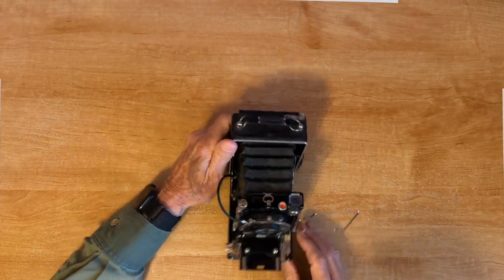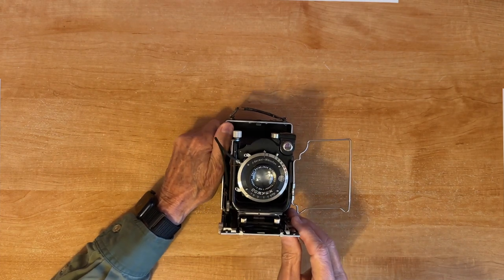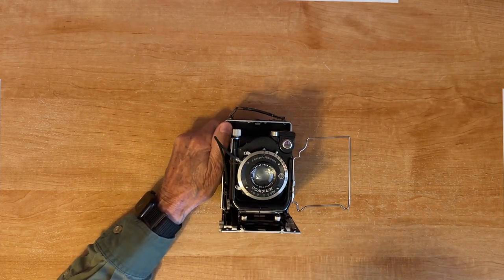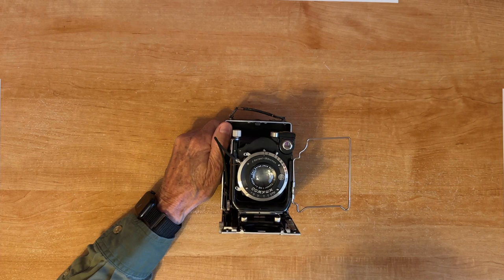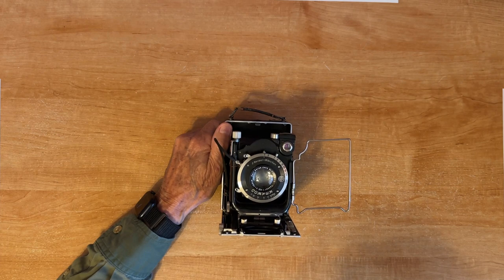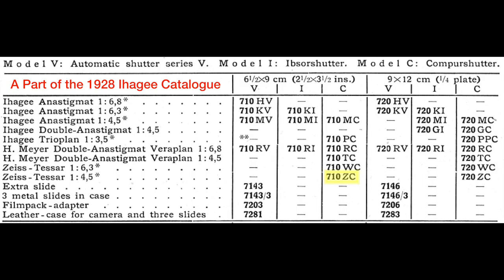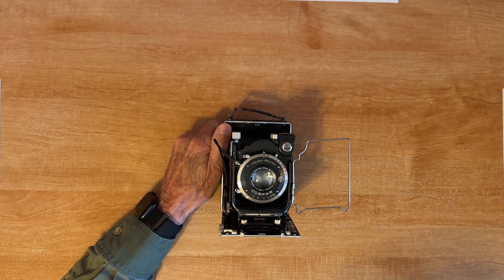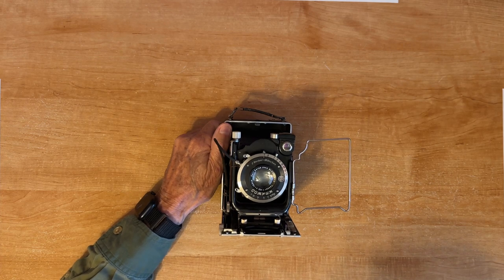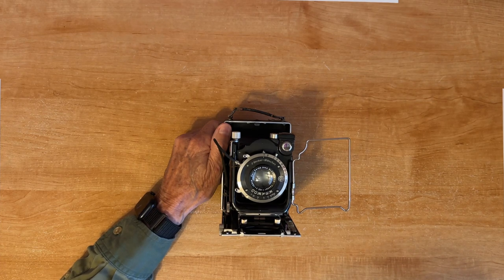On the front we have a good view of the lens. When you ordered this camera it could come with several different lenses. This is actually the better of the lens choices. This one's a Carl Zeiss 105mm f4.5. 105mm sounds like a lot but on this format camera that's pretty much a normal size.